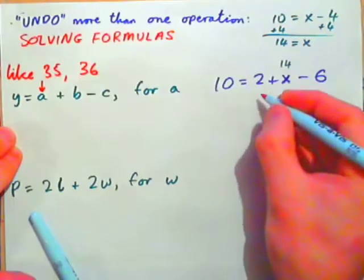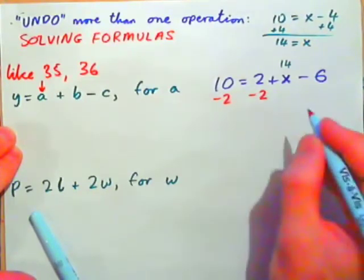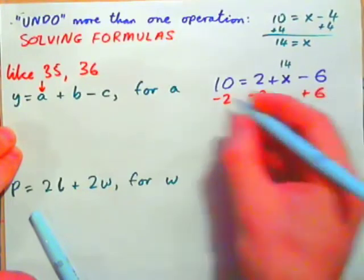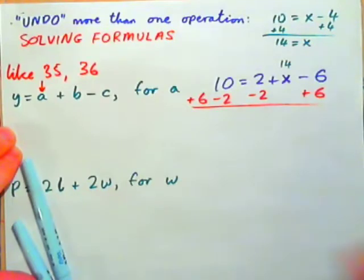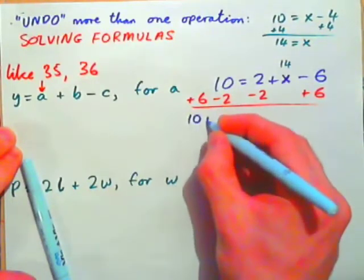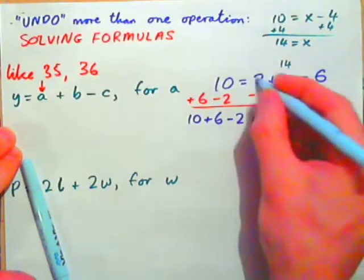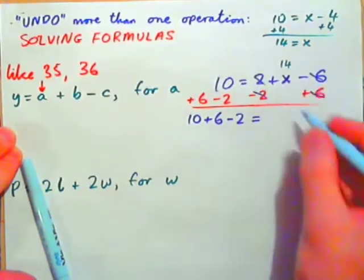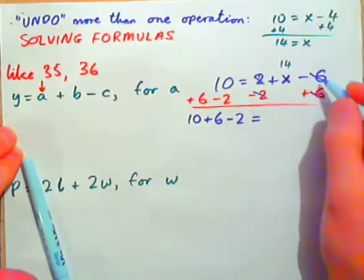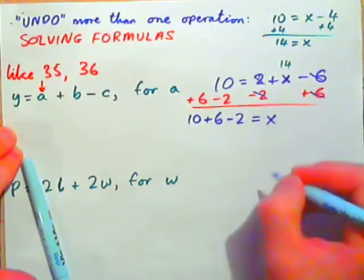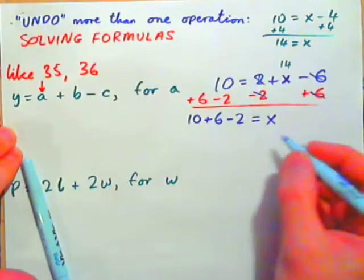Another way to do it is to subtract 2 from both sides and at the same time add 6 to both sides — two operations at once. You get 10 plus 6 minus 2 equals X. The 2 and negative 2 make 0; the negative 6 and positive 6 make 0. So 10 plus 6 minus 2 makes 14, and X is 14.